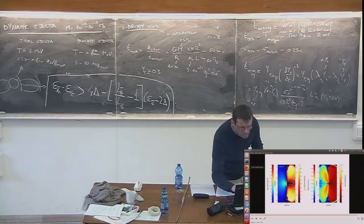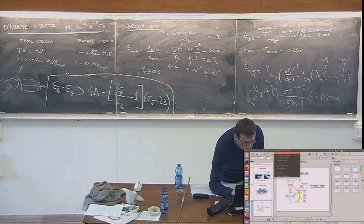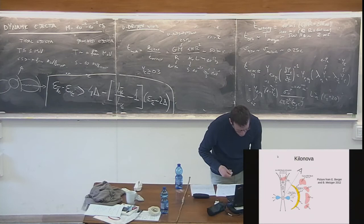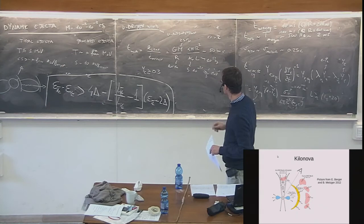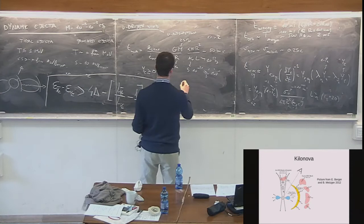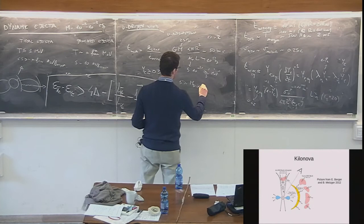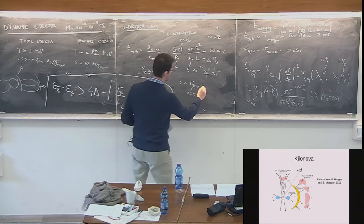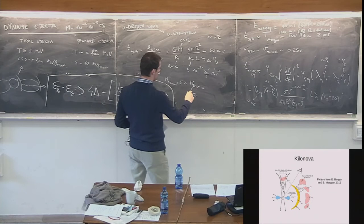How much mass does the neutrino-driven wind unbind? In our simulation, about 5% of the disk mass was unbound by neutrinos. With a typical disk mass of ~0.1 solar masses, this gives roughly 5×10^{-3} solar masses — similar in amount to the dynamic ejecta.